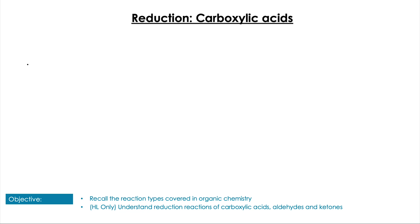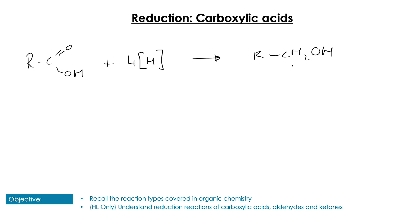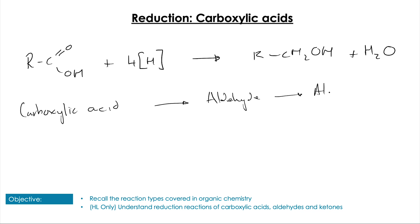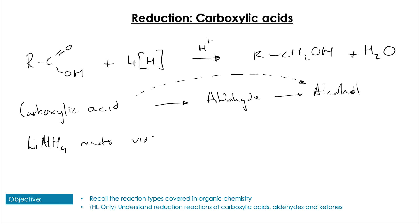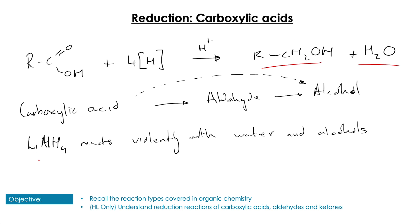For the reductions, we don't need mechanisms. We take any carboxylic acid and four moles of our reducing agent — written as [H] in square brackets, like [O] for oxidation — to form our primary alcohol and H2O. We go from the carboxylic acid through the aldehyde to the primary alcohol. However, there's no way to stop the reaction in the middle at the aldehyde — we have to go all the way to the alcohol. This requires LiAlH4, but it reacts violently with both water and alcohol, so the reaction must be conducted in diethyl ether solvent.